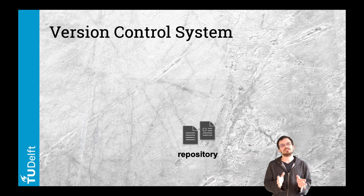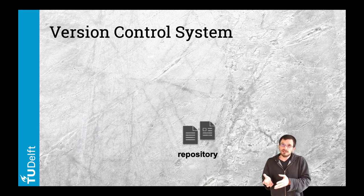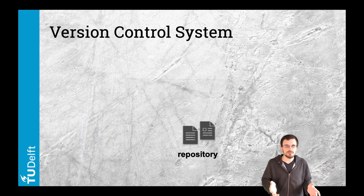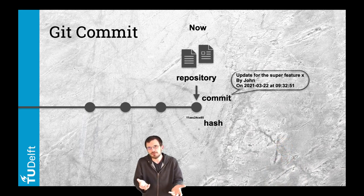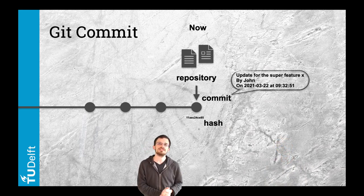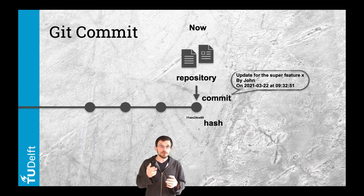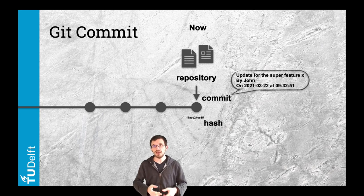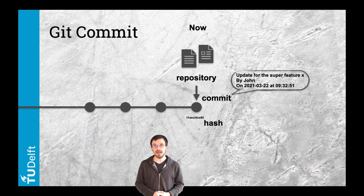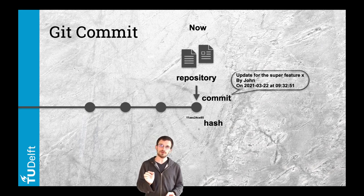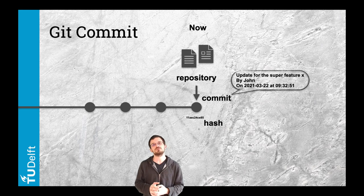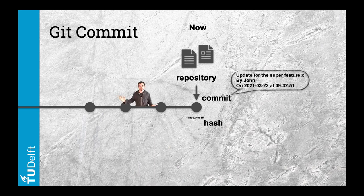With Git you have a repository — the directory that contains all the files of your project. A full copy lies on every team member's computer. The commit is a snapshot of that repository at a given time. When you commit, you attach a message that describes what changed and why compared to the previous version. It is attached to your name and the current time, and each commit is unique, identified by a hash.